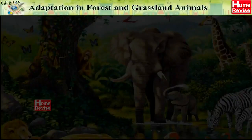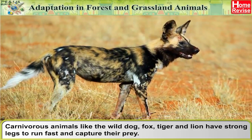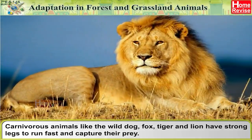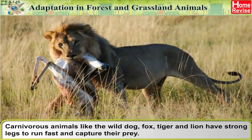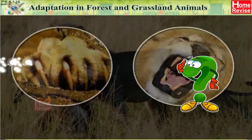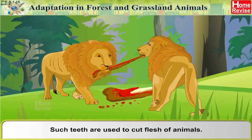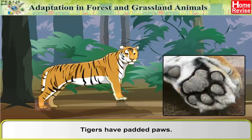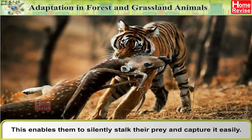Adaptation in Forest and Grassland Animals: Carnivorous animals like the wild dog, fox, tiger, and lion have strong legs to run fast and capture their prey. They have claws and sharp, pointed canine teeth used to cut the flesh of animals. Tigers have padded paws, which enable them to silently stalk their prey and capture it easily.